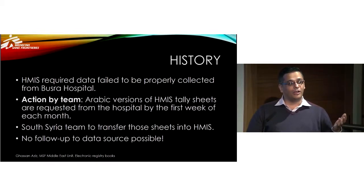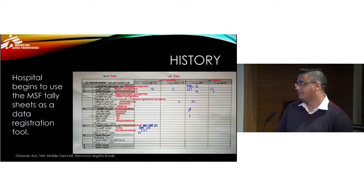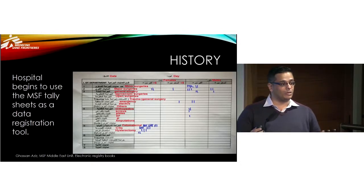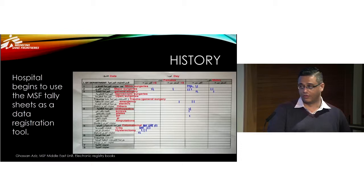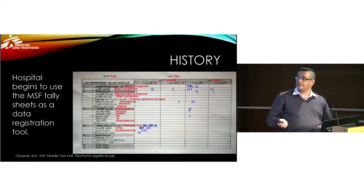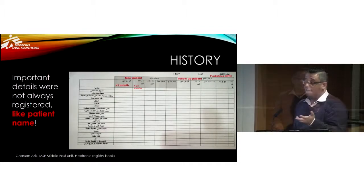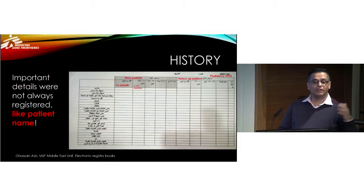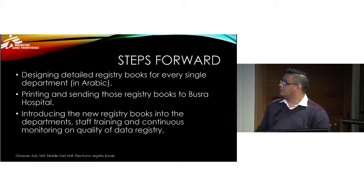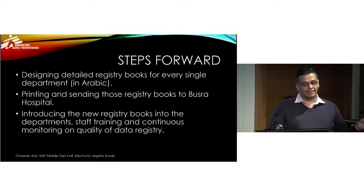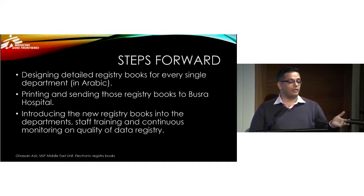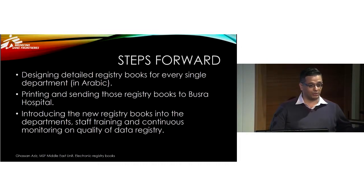We had no clue about the source of the data being sent from the hospital. The team was facing problems receiving the HMIS data on time — sometimes receiving data from one month only ten days or two weeks after the month ended. The first thing we discovered was that instead of having registry books in departments, they started using the tally sheets we sent every day, just tallying how many consultations, how many surgeries, even tallying new patients and follow-up patients in each category. So they started to lose any history of registry books and were unable to confirm whether a patient had been treated at this hospital two weeks ago.